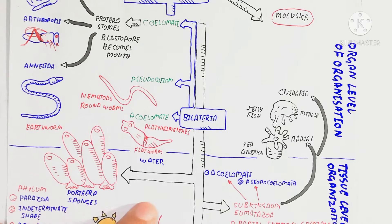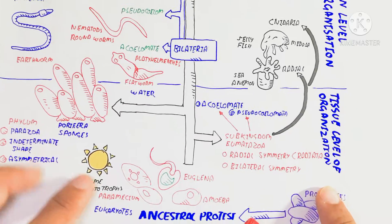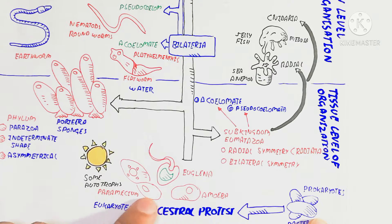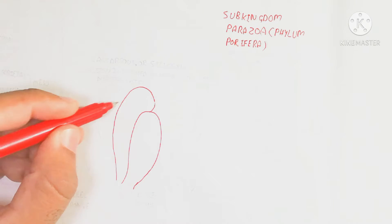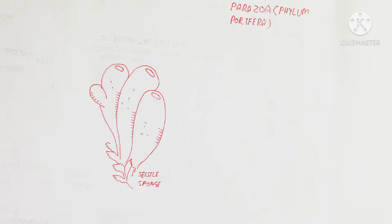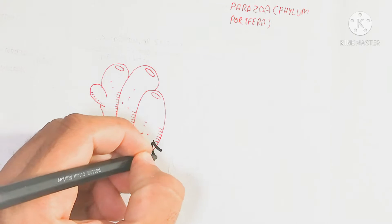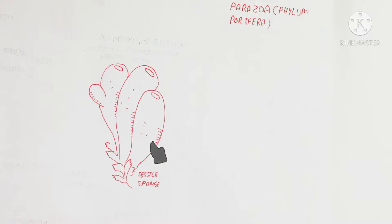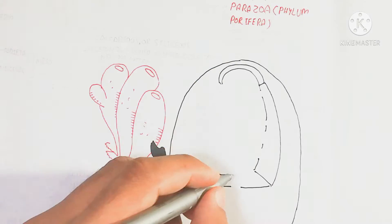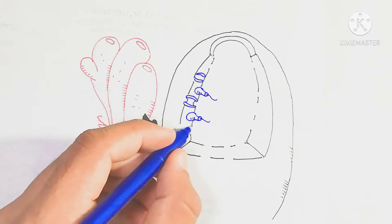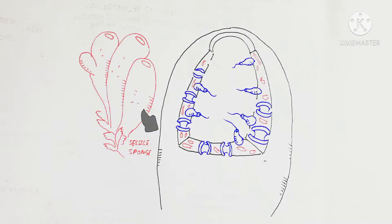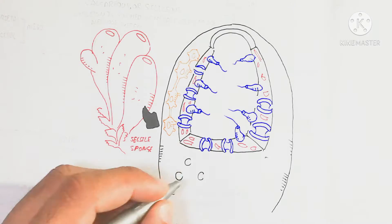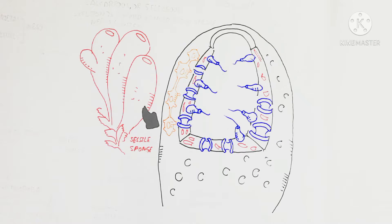The phylum Porifera contains the sponges, and is known as the tissue level of organization. They arose from ancestral protists, giving rise to Porifera at the tissue level. Sponges are sessile, meaning they are attached to the substratum. Porifera is also known as Parazoa.